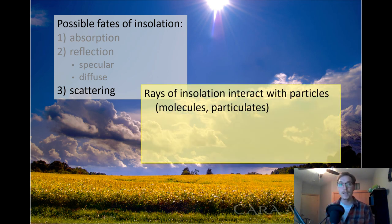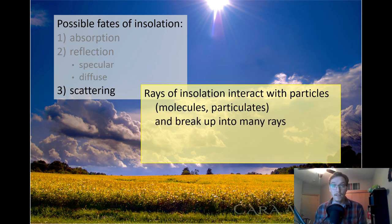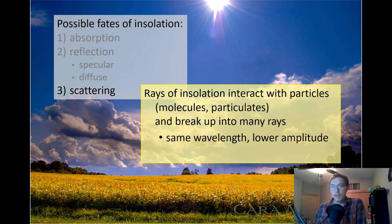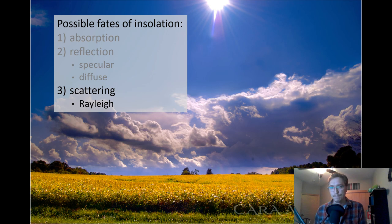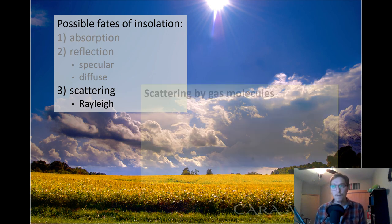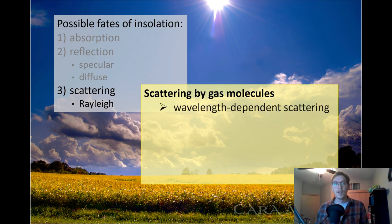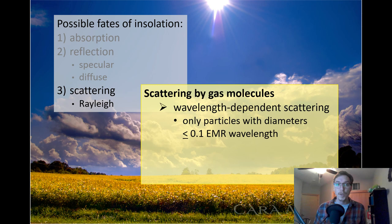Scattering is the next fate. Rays of insolation interact with particles, molecules, or particulates and break up into many rays of light of typically the same wavelength but a lower amplitude, going off in a variety of different directions. We have two primary types of scattering. Rayleigh scattering is scattering by gas molecules — it is wavelength-dependent scattering, only affecting particles with diameters less than or equal to 0.1 of the electromagnetic wavelength.